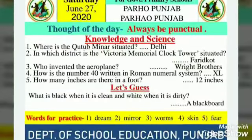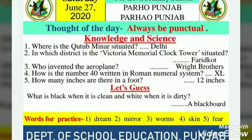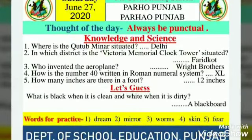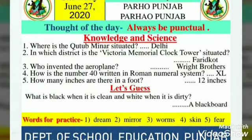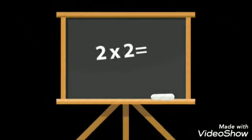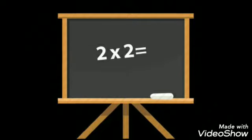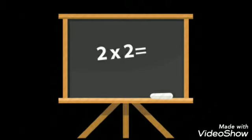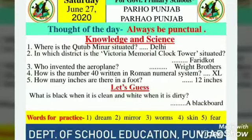Now the riddle: what is black when it is clean and white when it is dirty? The answer is a blackboard. A blackboard is clean when it is black and it is dirty when it is white.